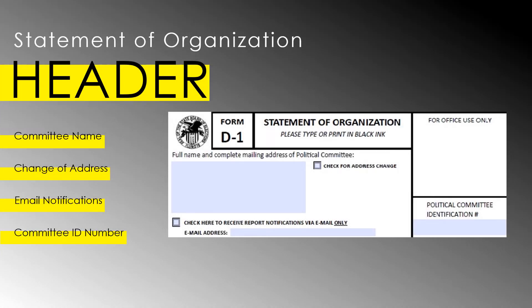The first section of the D-1 is the Headers section. In this section, you will find a place to put the full name and current mailing address of the committee. It's important to ensure the address chosen for the committee is one that is checked often, because all official committee mailings will be sent to that address.